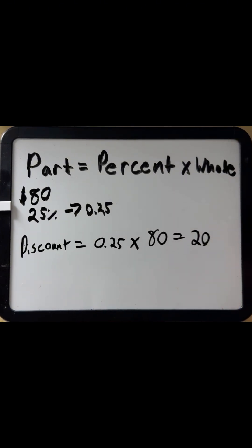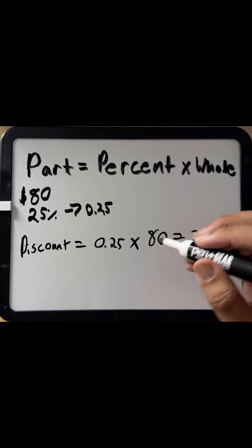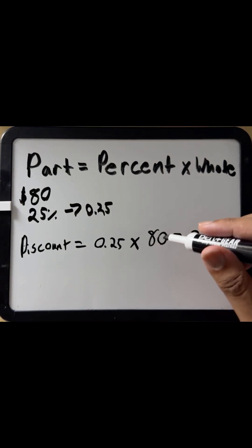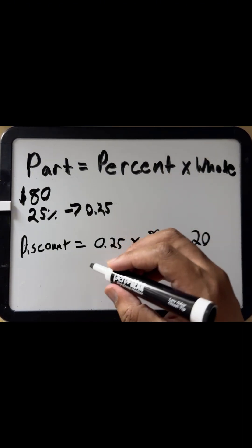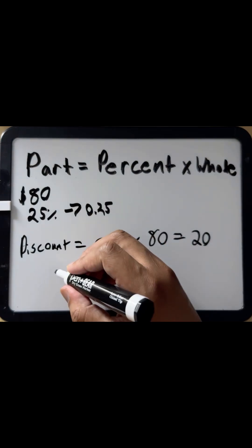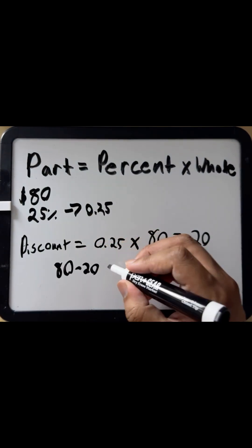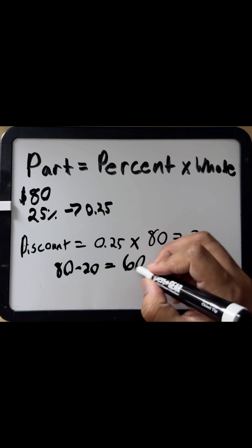So now we subtract the discount amount from the final price. The discount is $20. So to find the final price after our discount, we simply subtract. So 80 minus 20 equals $60.